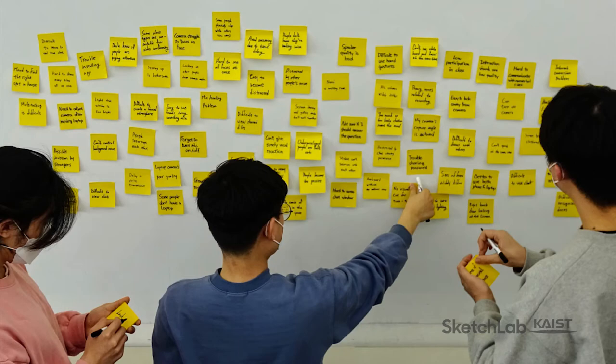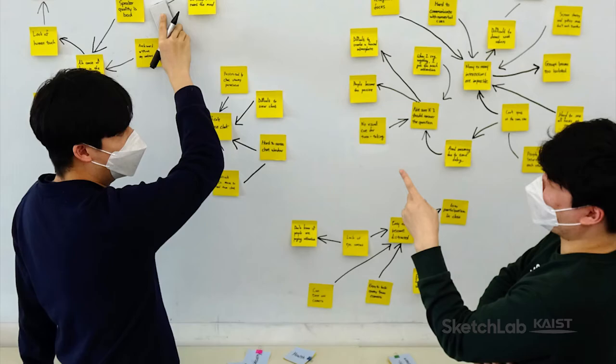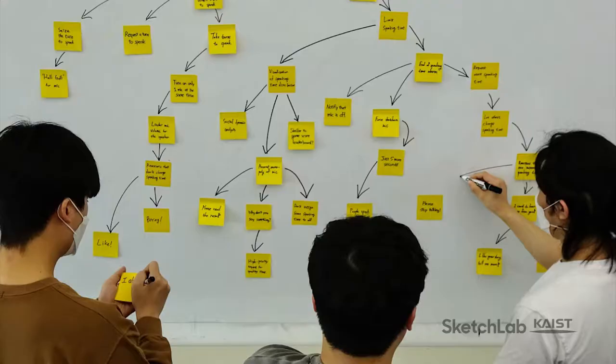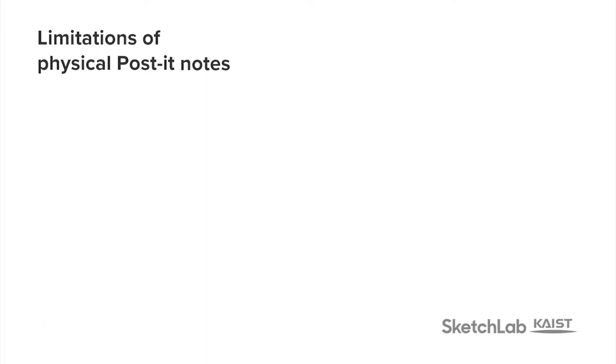Post-it notes are useful to collect many ideas, organize them into groups, order them by priority, visualize relationships, analyze the situation, and decide on what to do.